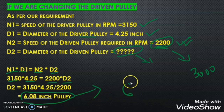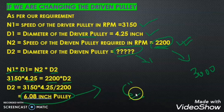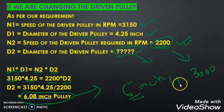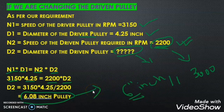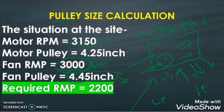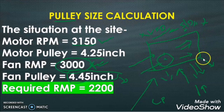The nearest available standard size is 6 inches, so we need to install a 6-inch pulley. We did exactly that, and we got the result — there is now no dripping of water from the FAHU.